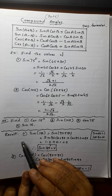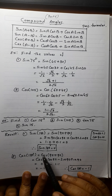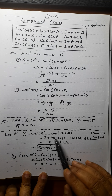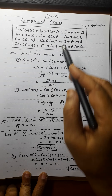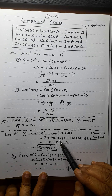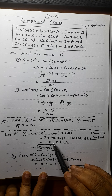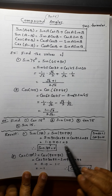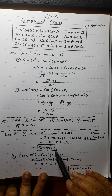Now I will derive some more results. Sin of 180° — I will derive it. Sin of 180° is sin of (90°+90°). Sin of (A+B) is sin A cos B plus cos A sin B, so it is sin 90° cos 90° plus cos 90° sin 90°. Sin 90° is 1, cos 90° is 0, cos 90° is 0, sin 90° is 1. So the answer is 0. Therefore, sin 180° = 0.